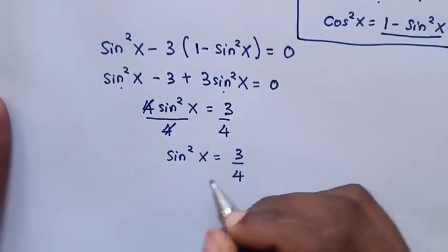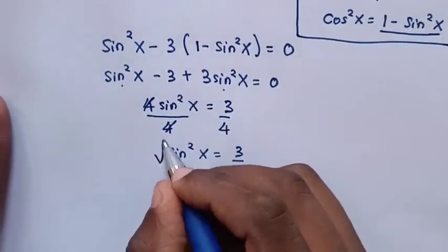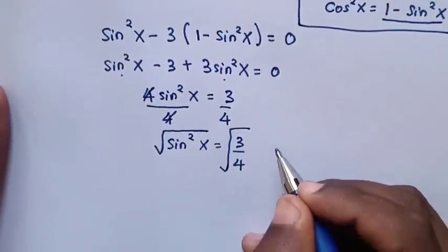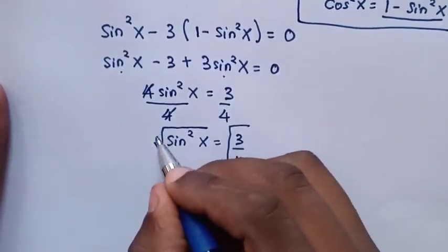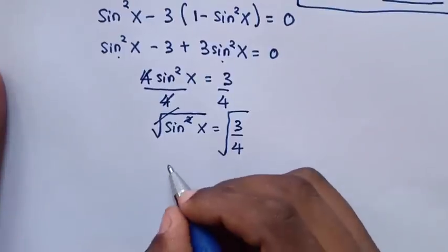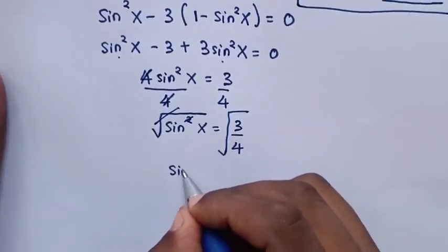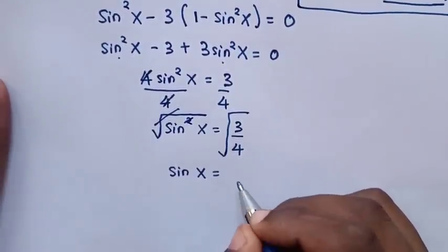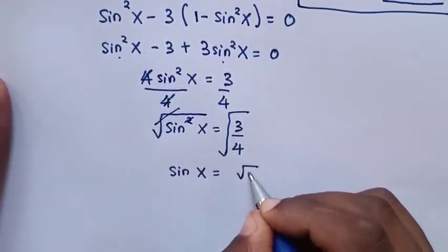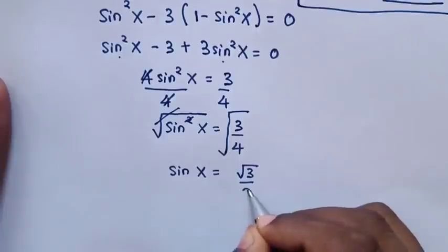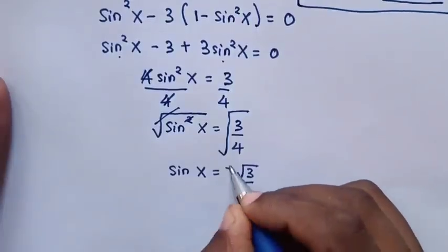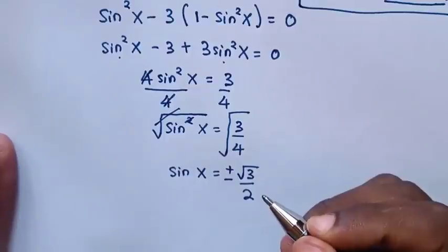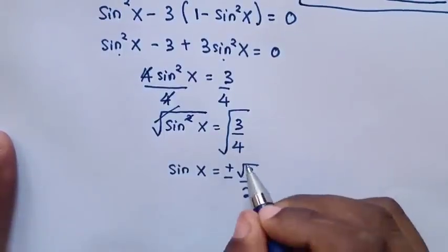We apply the square root to both sides. The square root cancels with the square, giving sin x equals plus or minus square root of 3 over 2.